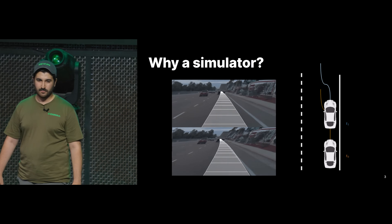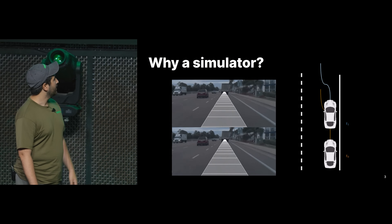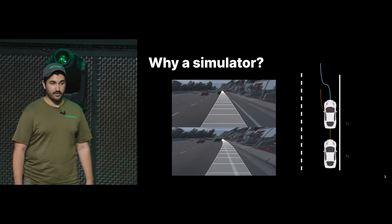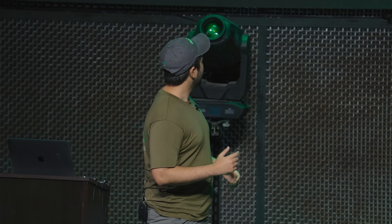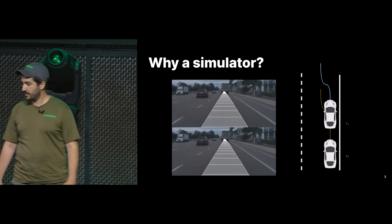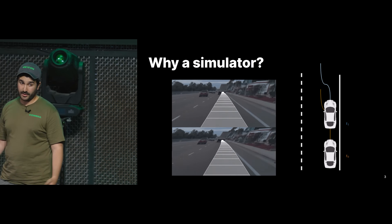Why do we even need a simulator? Without a simulator, the driving model will never be exposed to any kind of significant noise or significant deviations, especially the noise introduced from its own mistakes. If we train a model without a simulator and it ends up outside of the center of the lane, the model will always say just keep doing whatever you're doing, recover in a few seconds — and the next second it will say the same thing again. The result is a model that doesn't recover to the center of the lane and just drifts outside.